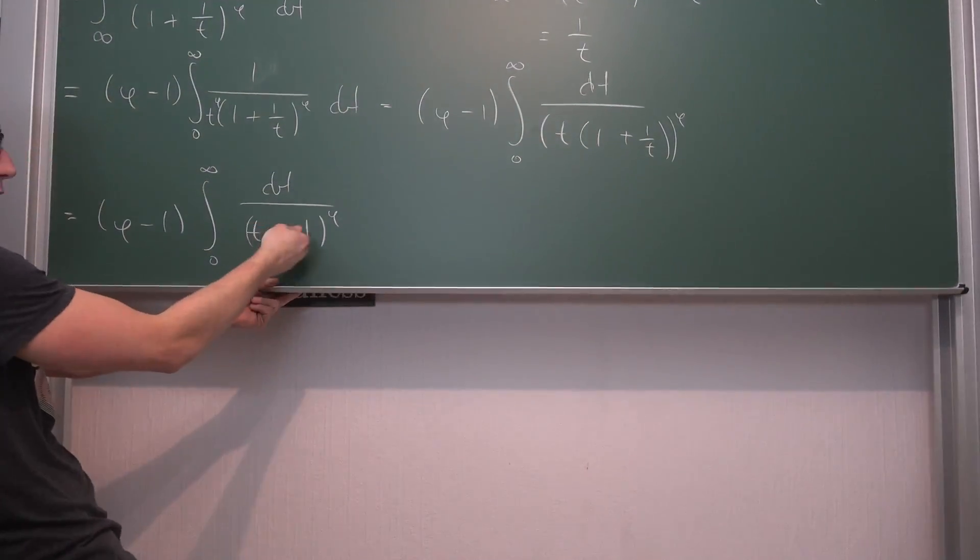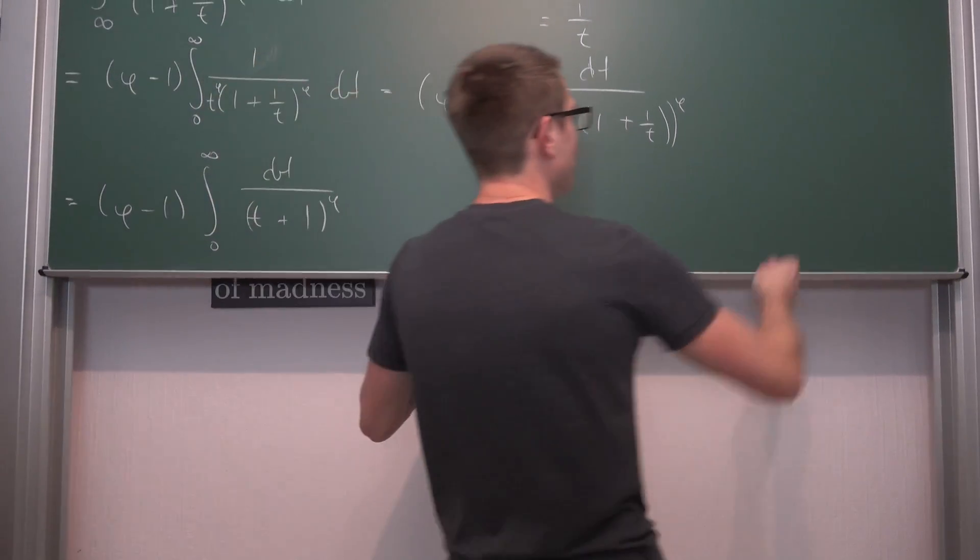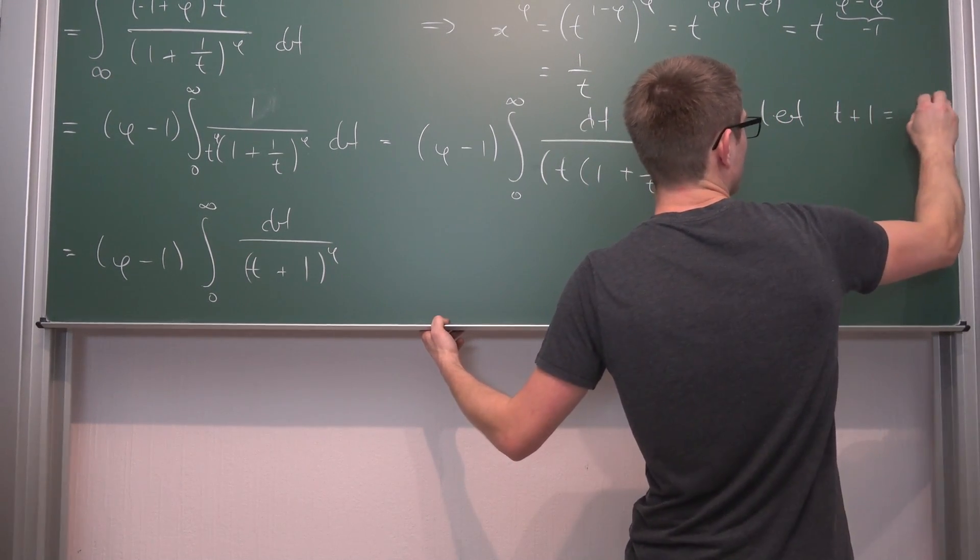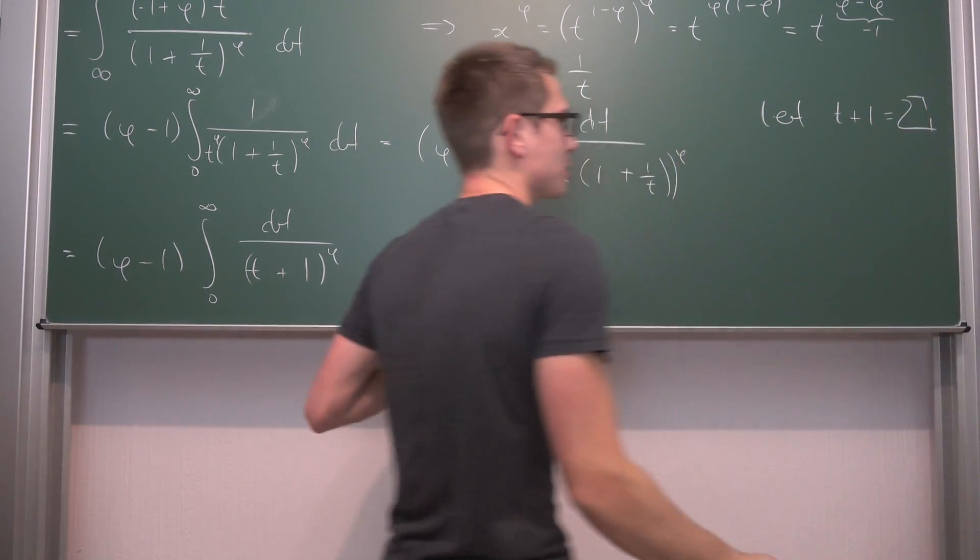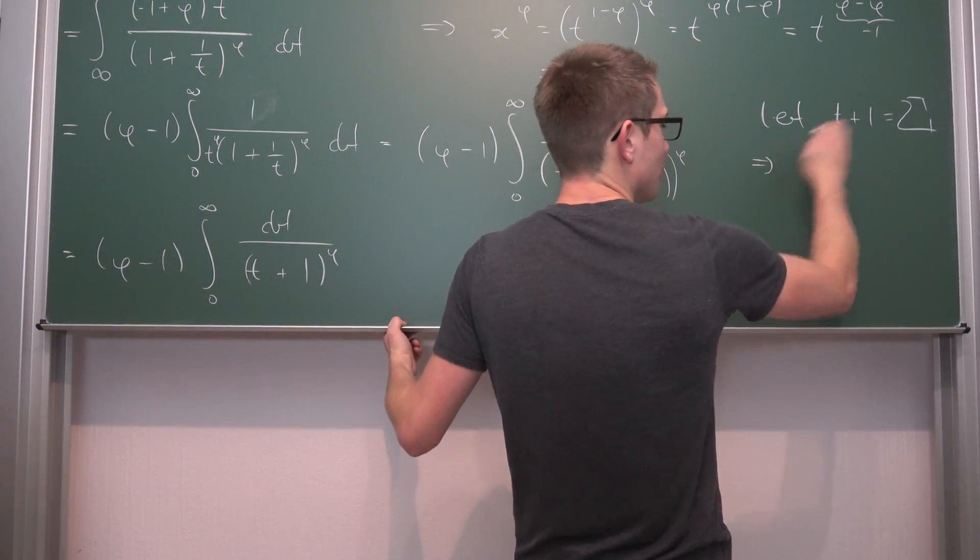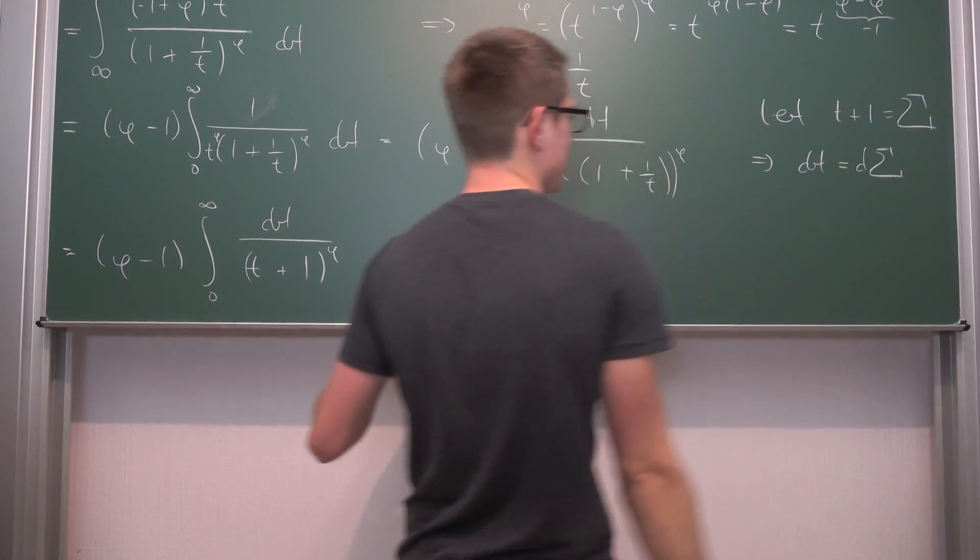And this is one that is very easy to solve. One more substitution and it all falls apart. Let our denominator part without the phi be equal to... let t plus 1 be equal to capital sigma, just to annoy everyone. Now if you implicitly differentiate both sides, we get dt is equal to d sigma.